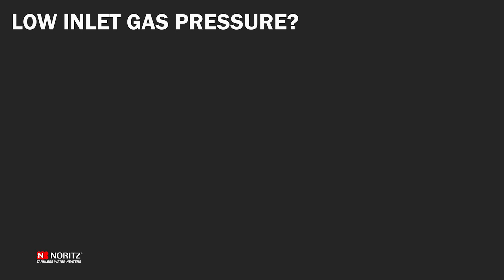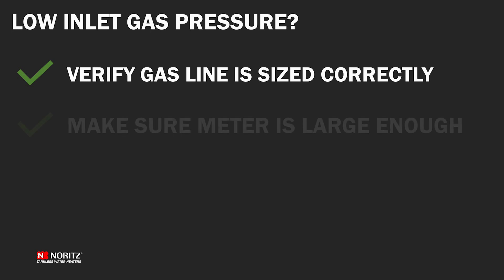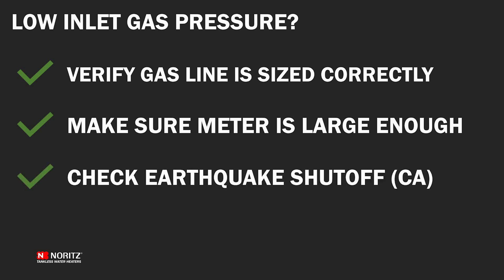If either the static or dynamic inlet gas pressure is below the minimum requirements of the unit, verify the gas line size and length are appropriate according to the guidelines in the installation manual. Also, make sure the gas meter or gas regulator is large enough to handle the total BTU load of all gas appliances at the home. Additionally, for California installations, check that the earthquake safety shutoff has not been tripped.